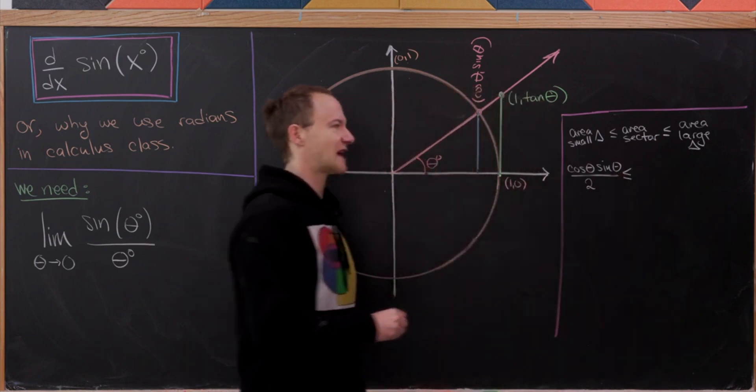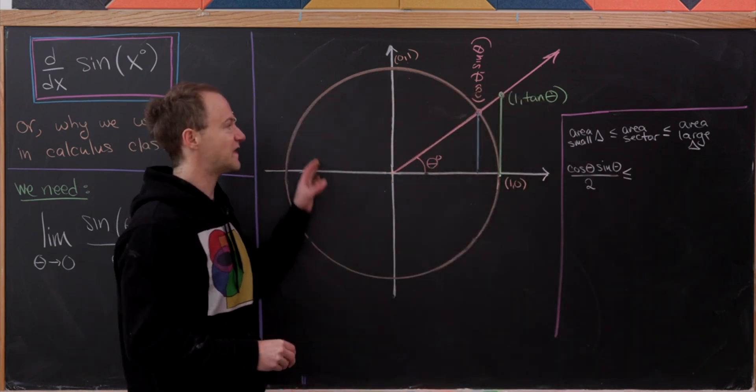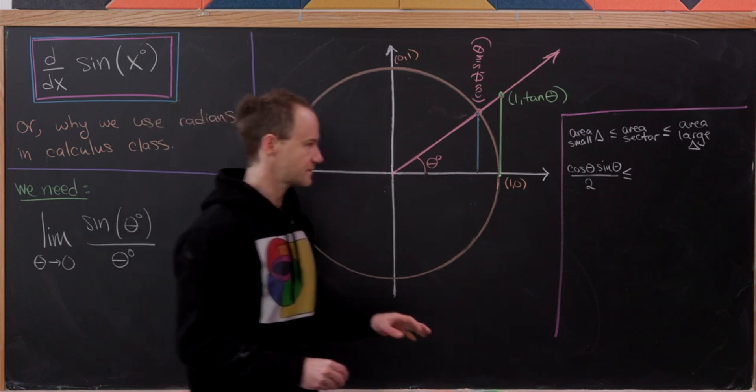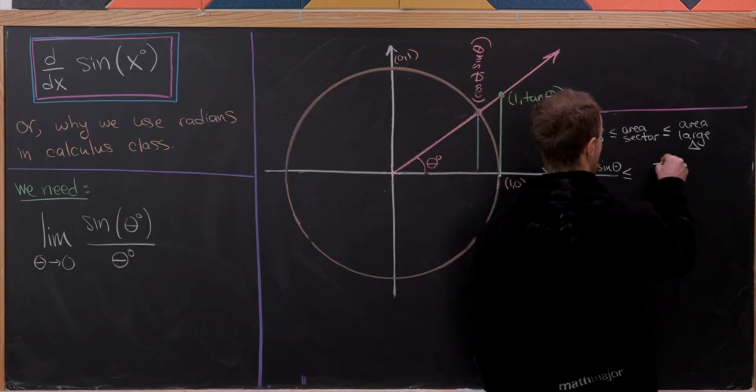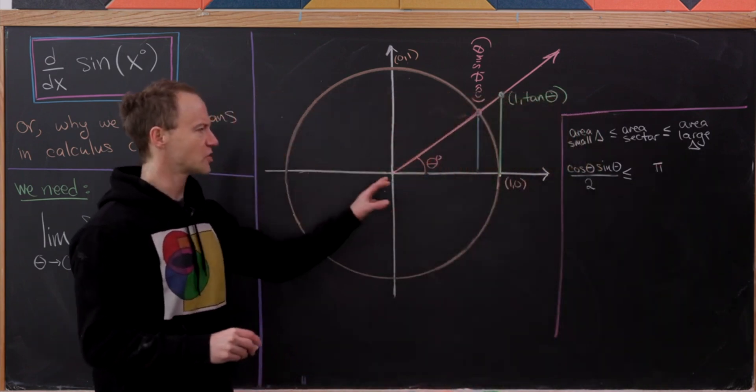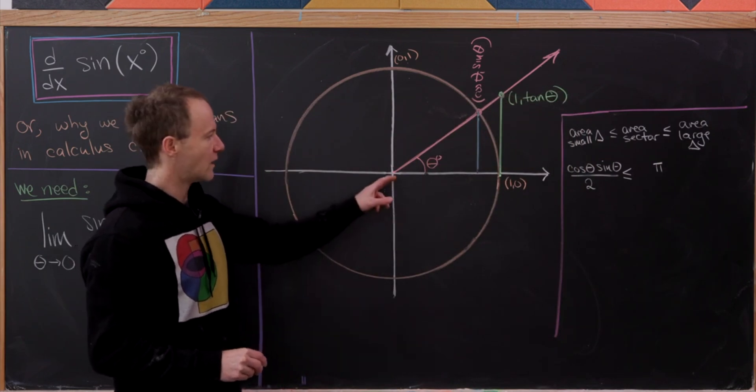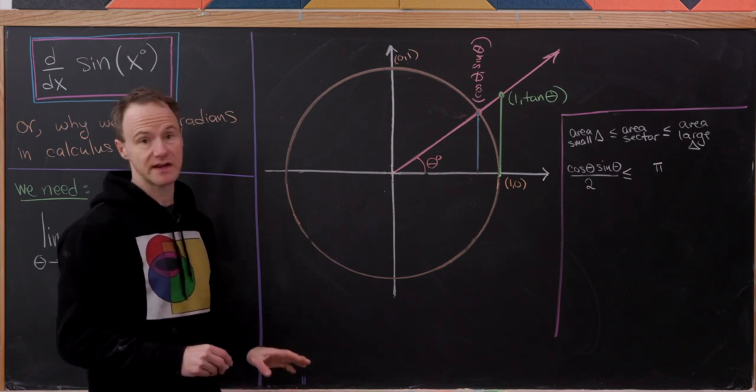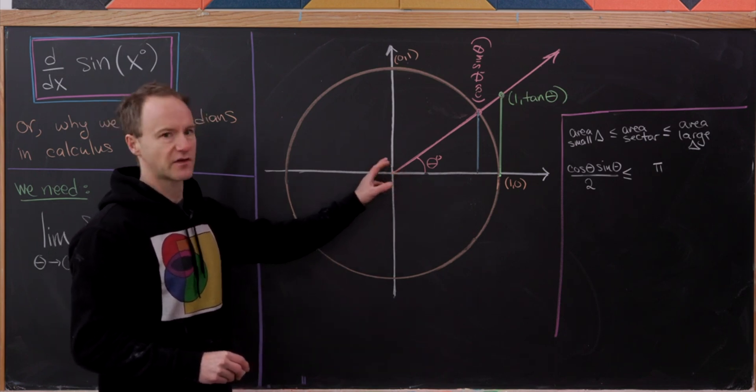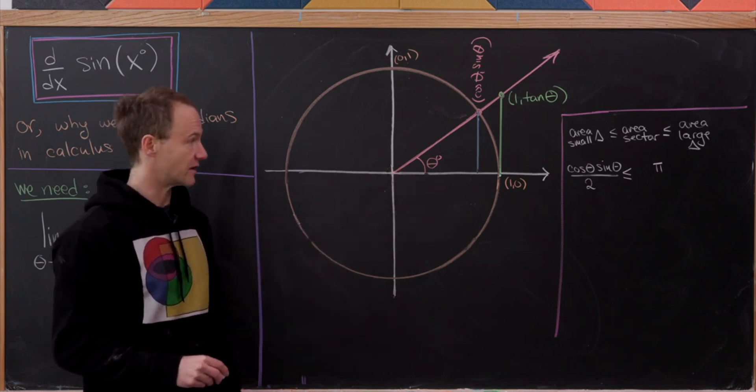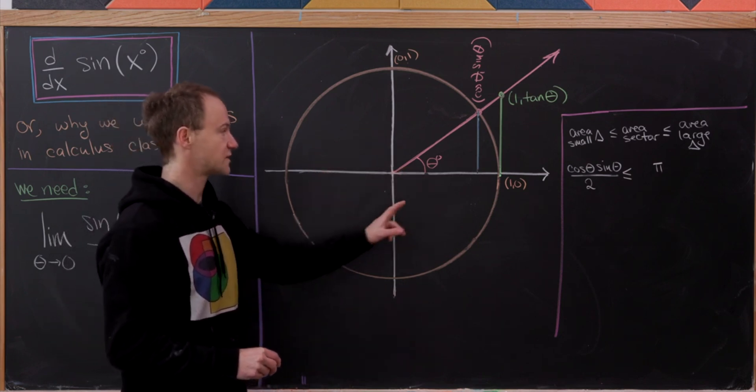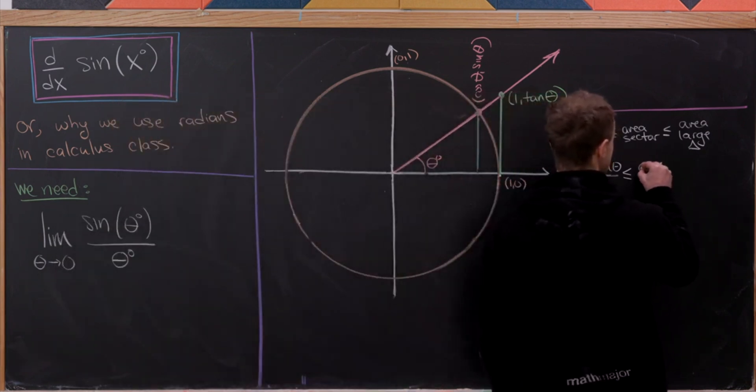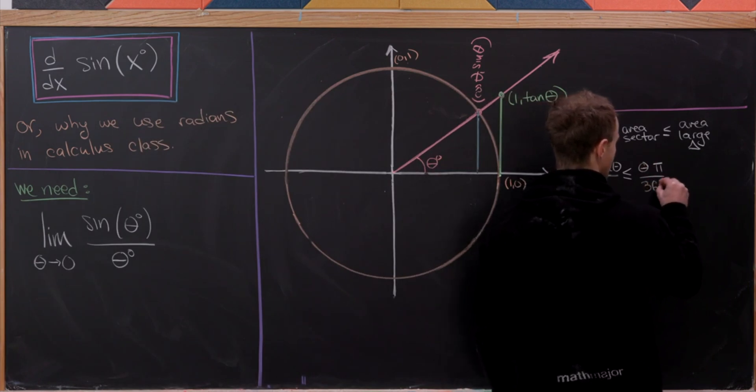But now what about the area of a sector of a circle? Well, we're going to start with the area of the entire circle, which is pi r squared. The radius here is simply one, so the area of the whole circle is pi. But then what proportion of the circle do we have? Well, in order to cover this entire circle, our angle theta would need to be 360 degrees. So since we've got theta degrees, which is probably less than 360, the proportion of the circle we have is well, it's going to be exactly theta divided by 360. So here we have theta times pi over 360.